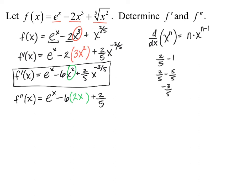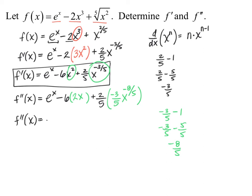Then we have our coefficient of two-fifths, which we multiply by the derivative of x to the negative three-fifths power. That negative three-fifths comes in front as the coefficient, and we carefully subtract one from the exponent: negative three-fifths minus one is negative three-fifths minus five-fifths, leaving us with negative eight-fifths for the exponent. Simplifying, our second derivative is e to the x minus 12x minus six over 25 times x raised to the negative eight-fifths power.